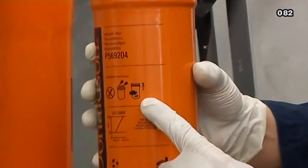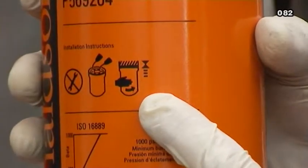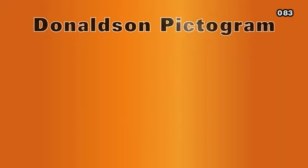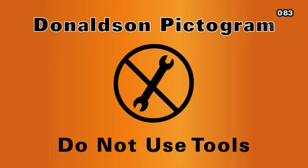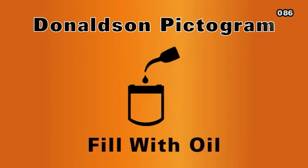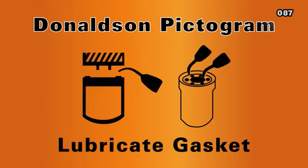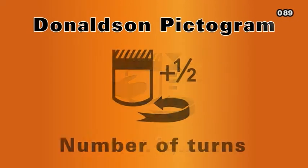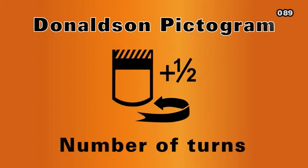Donaldson spin-on filters have pictograms on the side to define the service maintenance steps. To help you understand, here is a brief pictogram review. Do not use tools. Clean the filter base. Fill with oil. Lubricate the gasket. Hand tighten. Tighten the filter according to the instructions printed on filter.